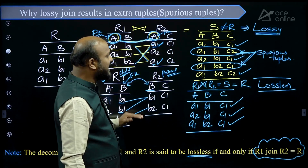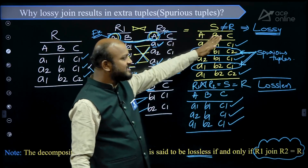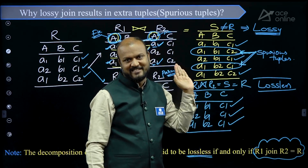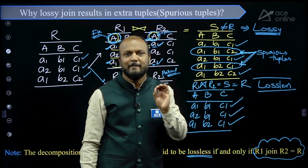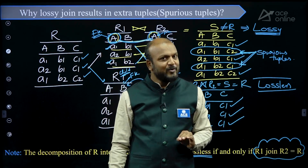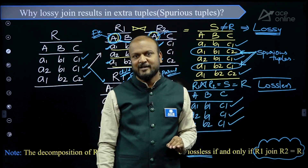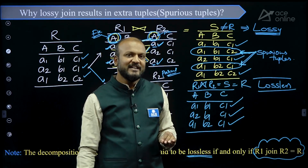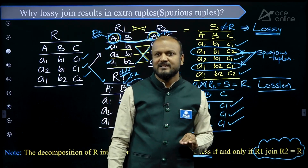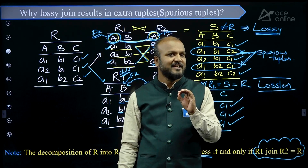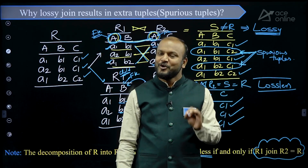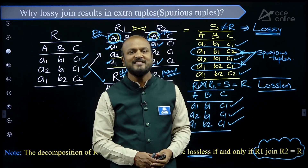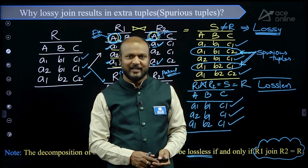If proper parent-child decomposition happens, you don't get extra tuples, you don't lose any tuples, and the decomposition is lossless. If it doesn't happen, then the decomposition is lossy and you are going to get extra tuples called spurious tuples. This is the basic concept of lossy and lossless decomposition. Hope you understood and enjoyed this concept. Thank you very much.